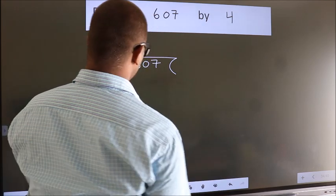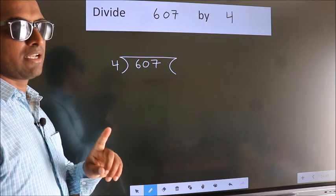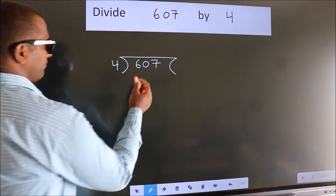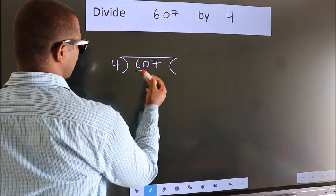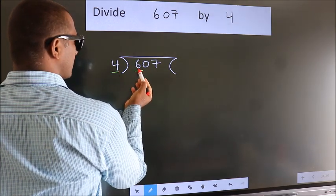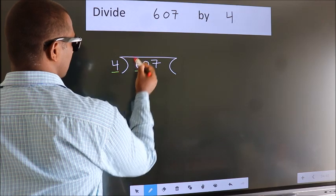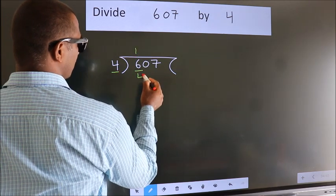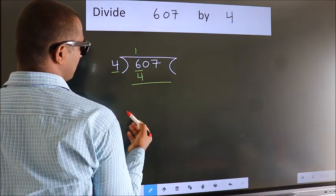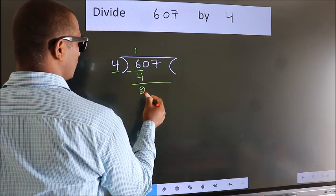This is your step 1. Here we have 6, and here 4. A number close to 6 in the 4 times table is 4 ones, which is 4. Now we subtract and we get 2.